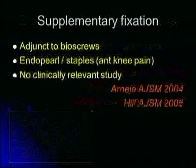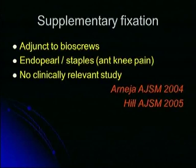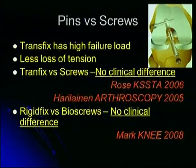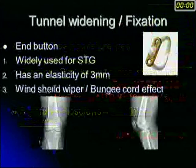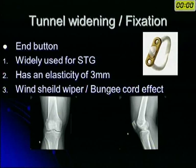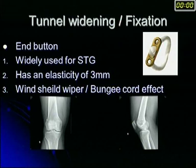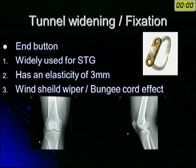Looking at meta-analyses of supplementary fixation: many surgeons do additional fixation on the femur and tibia using staples, endo-pearls, etc., but there is no clinically relevant study clearly showing you have to use that. Regarding transfix pins versus screws: the transfix has a high failure load — almost more than 2000 newtons compared to 500 newtons with an ordinary screw — but clinically it doesn't matter whether you use a screw or a cross-pin, as clinical results are almost the same. The endobutton is one of the most popular fixation methods among arthroscopic surgeons, widely used with hamstring grafts, but remember it has an elasticity of about 3 millimeters and the windshield wiper or bungee cord effect has been well described. Tunnel widening is slightly more with the endobutton group, but clinically it does not make a significant difference.